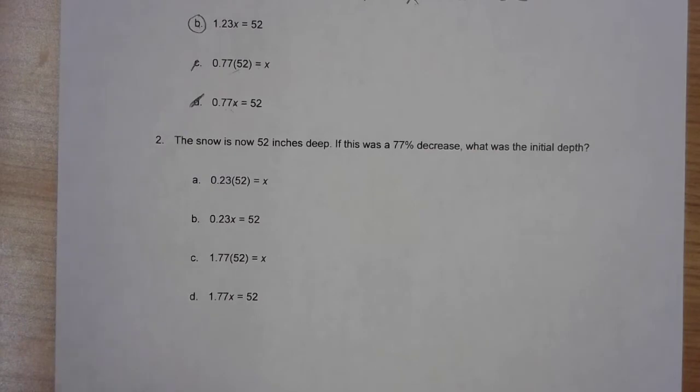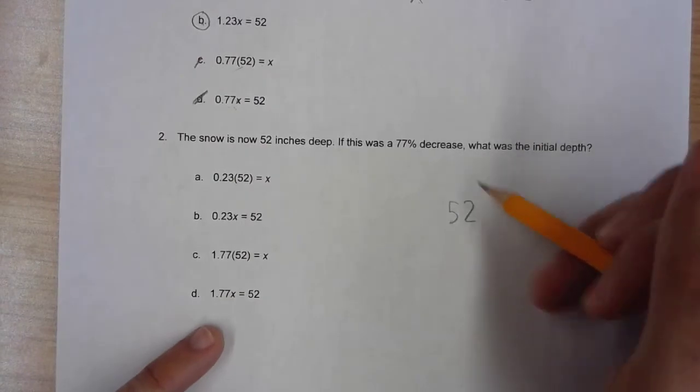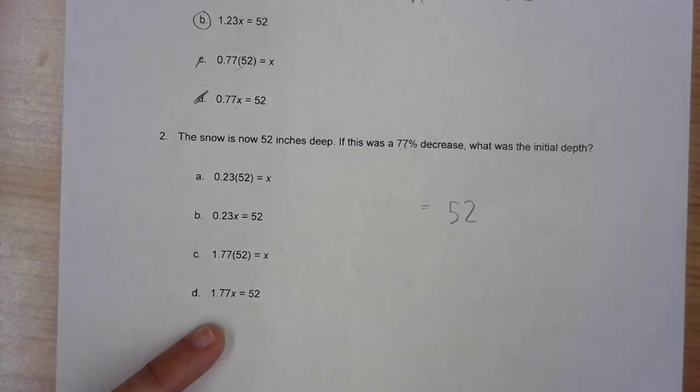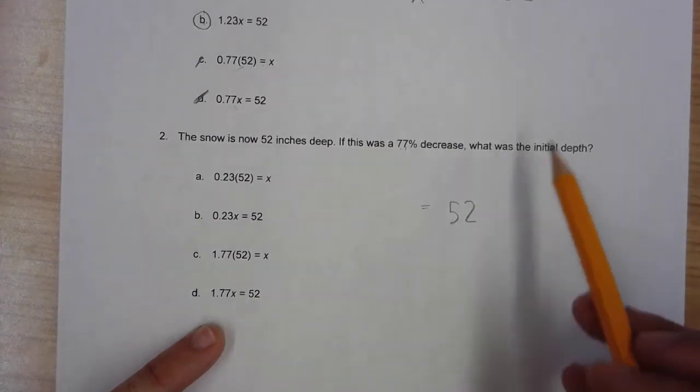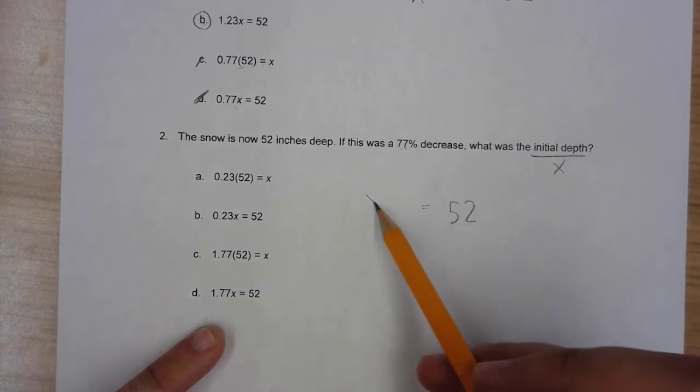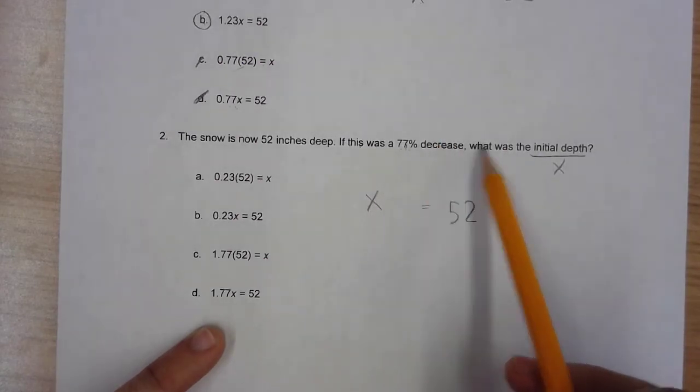Now the bottom one is a very similar one - similar numbers, similar context - but we need to make sure that we are reading carefully. This is a 100% reading test. Math is easy, reading not so much. The snow is now 52 inches deep. If this was a 77% decrease from let's say last week, what was the initial depth?